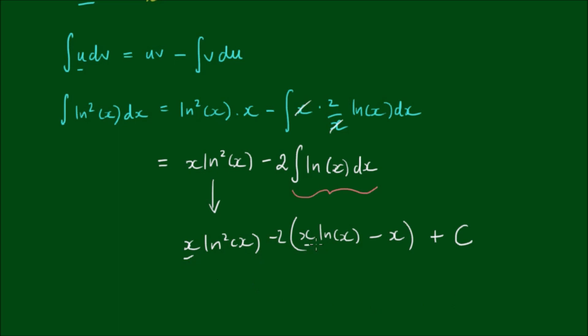We don't need to, but we could factor out an x. So let's just do that for the sake of it. So we have x outside of log squared of x, minus 2 by log x, plus 2. So take the negative 2 into the parentheses, plus the integration constant, c. And that is the integral of the log squared of x dx.